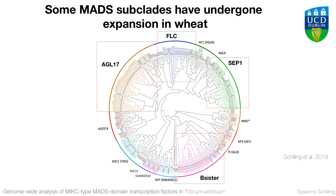However, some of the clades are actually bigger than we expected. For example, AGL17-like genes — we know that there are six of them in rice, so we would expect around 18 to 20. What we find is actually 47. The same is true for FLC-like genes, SEPALLATA-like genes, and B-sister genes. What does that mean? We were a bit puzzled by this finding, and wondered if we could find an evolutionary or mechanistic explanation for it.